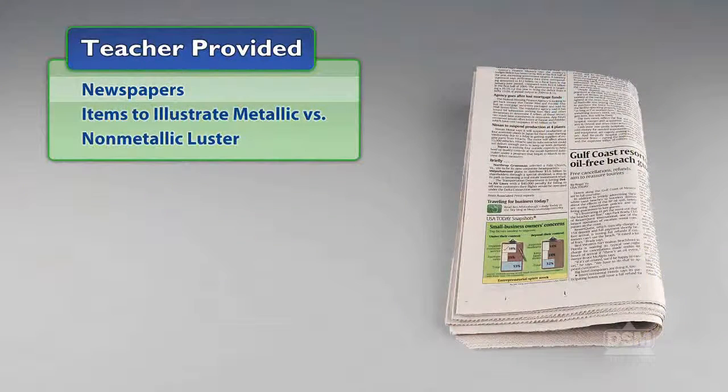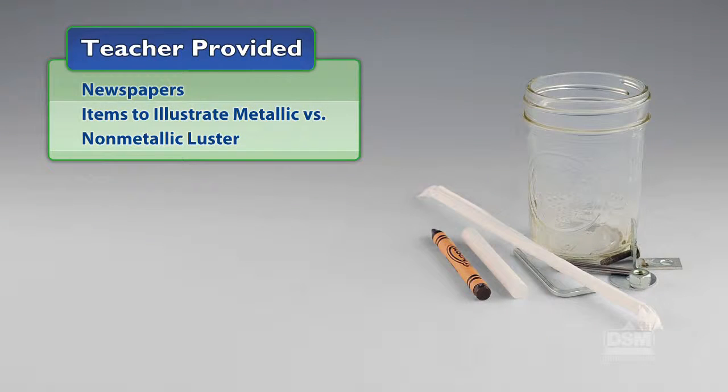You will also need to provide newspapers and items to illustrate metallic versus non-metallic luster, a piece of chalk, a piece of graphite from a pencil, a drinking glass, and unpainted pieces of polished and unpolished metal.